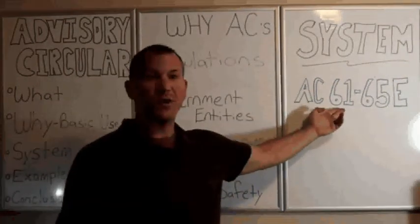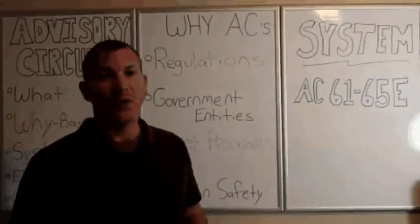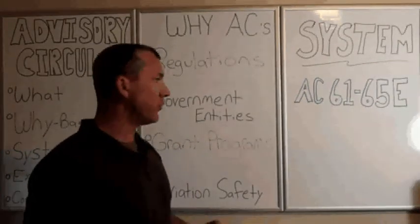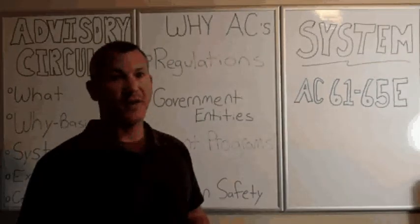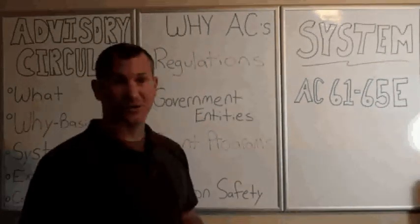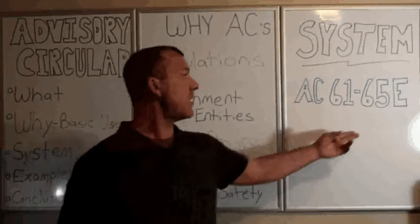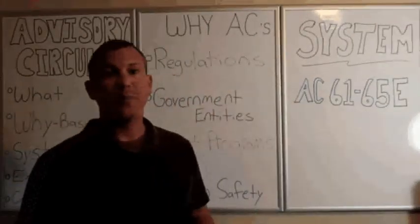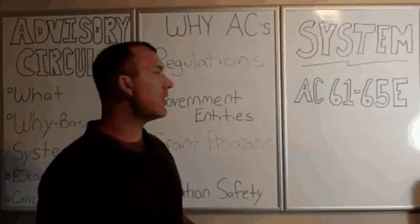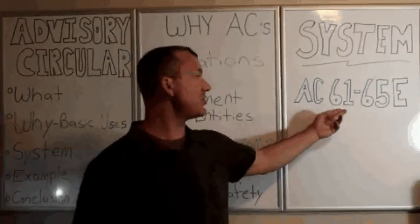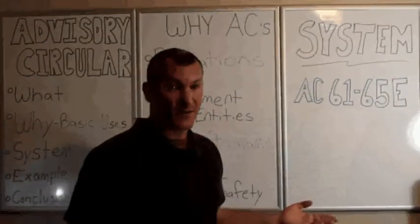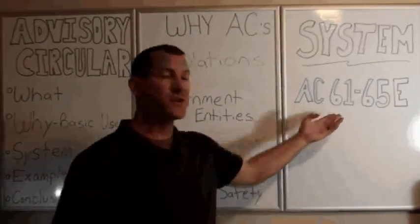Then the next number, in this case 61, represents the part of the FAR that it applies to. So part 61 is certification of pilots and instructors. The next number in the series, starting after the dash, represents the sequential number of advisory circular that has been issued for this part. So this would be the 65th advisory circular related to part 61.